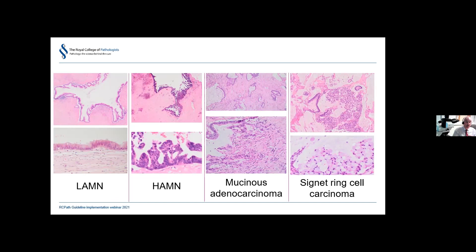HAMNs also show pushing invasion with no infiltration, but at high power you will see distinctly high-grade cytology with almost total loss of polarity, crowded nuclei, pleomorphism, and many mitotic figures. Occasionally cribriform structures are seen, but in the appendix, cribriform structures are not required for a high-grade designation — unlike in the colon. Most mucinous neoplasms are actually LAMNs; HAMNs are unusual lesions.